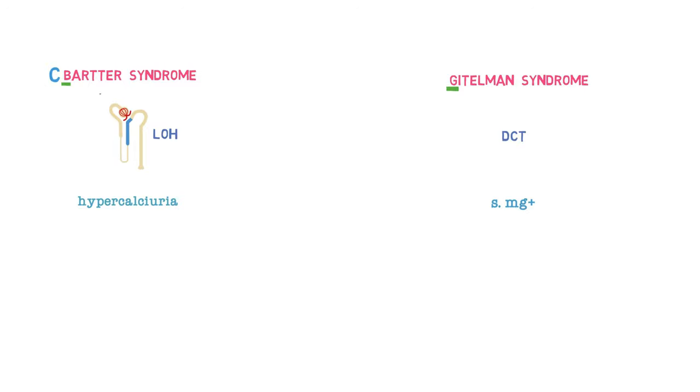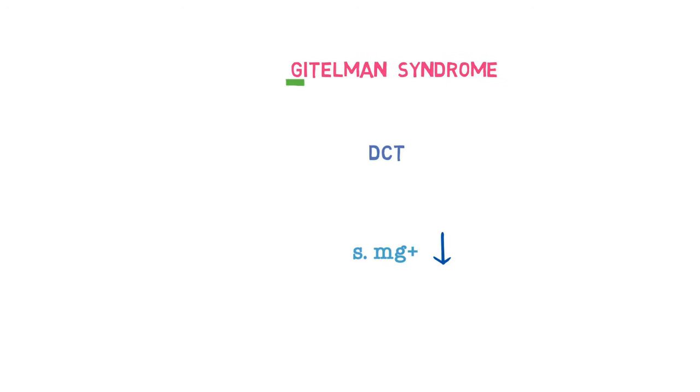Now, serum magnesium levels are low in Gitelman. This can also be remembered by the spelling of the name itself. M stands for magnesium and the L low levels. So, low levels of magnesium are found in Gitelman while hypercalciuria is seen in Bartter syndrome.